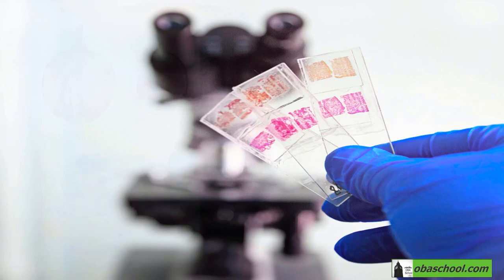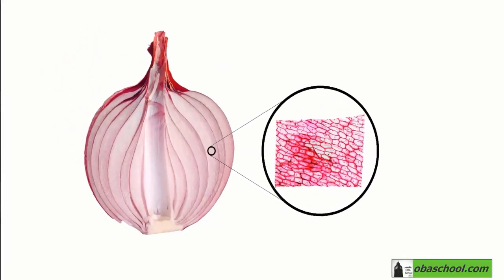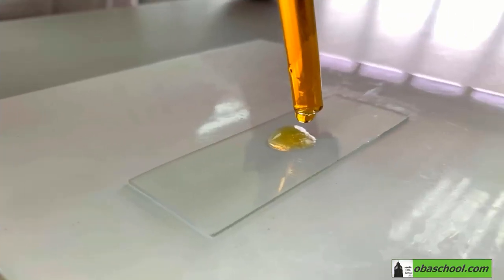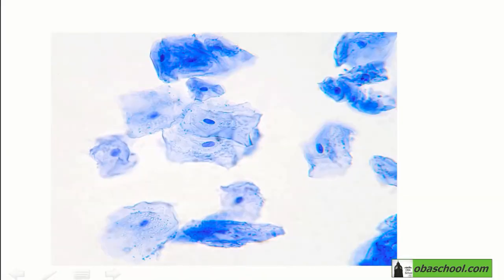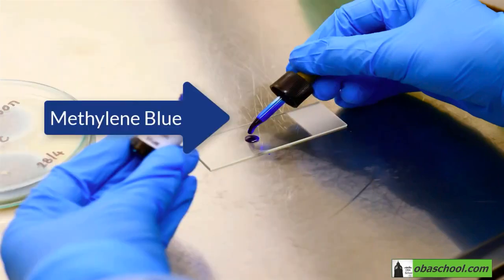Keep in mind that the stain used differs according to the cell's type. For onion cells, we add a drop of iodine, whereas for cheek cells, we add a drop of methylene blue.